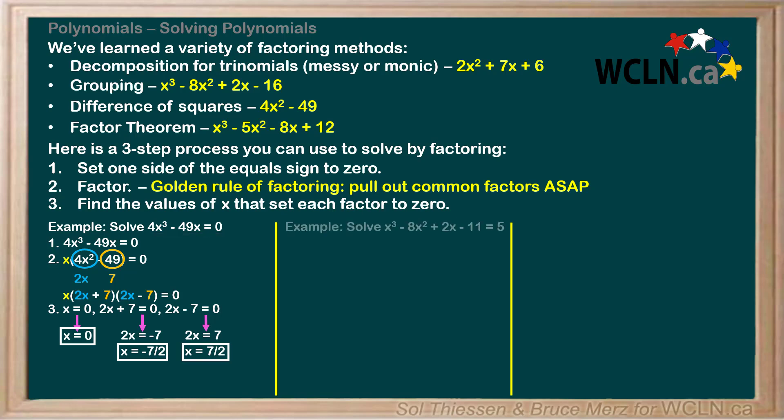Moving forward to the next example, solve x³ - 8x² + 2x - 11 = 5. Step 1 is to set one side of the equal sign to 0, so we subtract 5 from both sides to give us this equation, which matches the example for factoring by grouping from above.